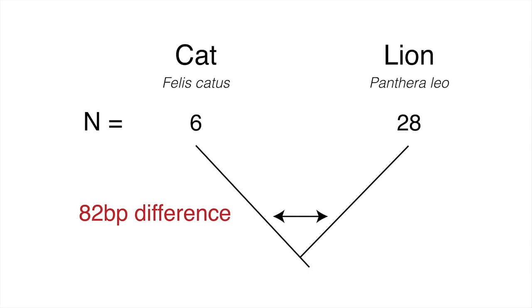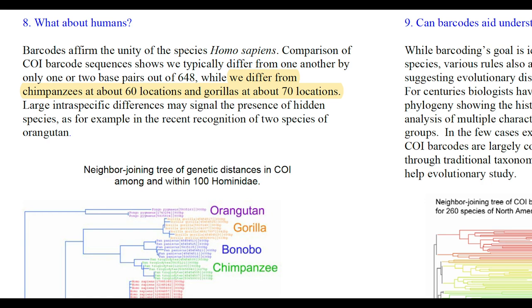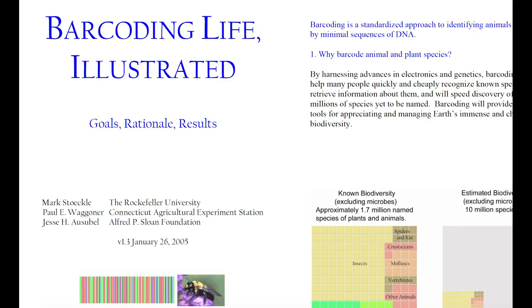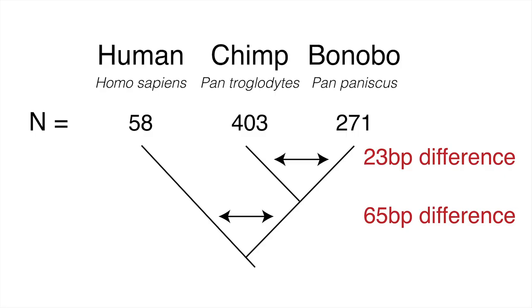What about felines? Well, Raw Matt doesn't actually cite any studies to back up his claim, so I decided to perform the analysis myself. I downloaded CO1 barcode sequences for 27 different feline species, including the domestic cat and lion, aligned them and clustered them by species. There were about 82 nucleotide differences separating domestic cats and lions. I also repeated the analysis for humans, chimps and gorillas. I found about 60 nucleotide differences between humans and chimps, and about 70 nucleotide differences between humans and gorillas. However, I didn't find 58 nucleotide differences between chimps and bonobos — I found less than half that number, around 23 nucleotide differences.